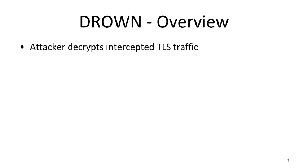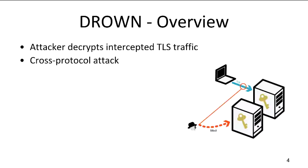What this allows an attacker to do is to decrypt TLS traffic. It's obviously a cross-protocol attack where we attack a TLS implementation using an SSLv2 server. Those two servers may be the same machine or even the same process — the same server that supports both TLS and SSLv2 — but these might also be two separate servers that happen to share the same RSA key. And when an SSLv2 server shares its RSA key with a TLS server, the TLS server is just as vulnerable.